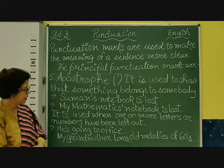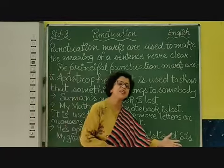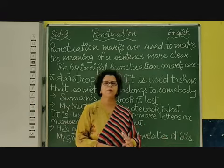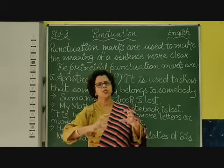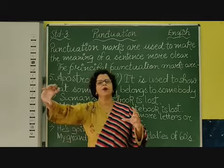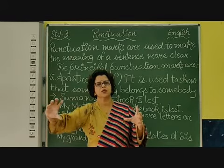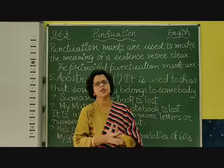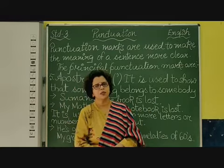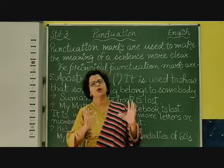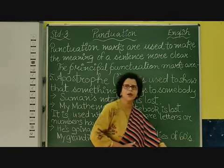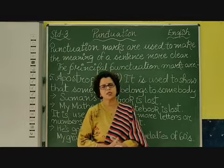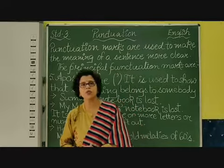Or, it can be in numbers also. We can use with the numbers. My grandmother loves old melodies of 60s. It shows the number. I have not written 1960. It shows 60s means the whole period of 60s, from 1960 to 1969. So this period, there you put apostrophe as apostrophe 60s.